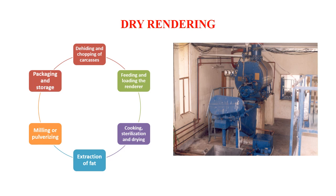Although wet rendering has been discussed, it has many disadvantages as an older technology and is now becoming obsolete. Dry rendering is now more important, more beneficial, with better yield and commercial benefit. In this process, first there is de-hiding and chopping of the carcass, whether dead animal or condemned carcass. There is a pre-breaker that crushes the material into smaller pieces. After that, loading is done at the first floor level through a loading hopper.